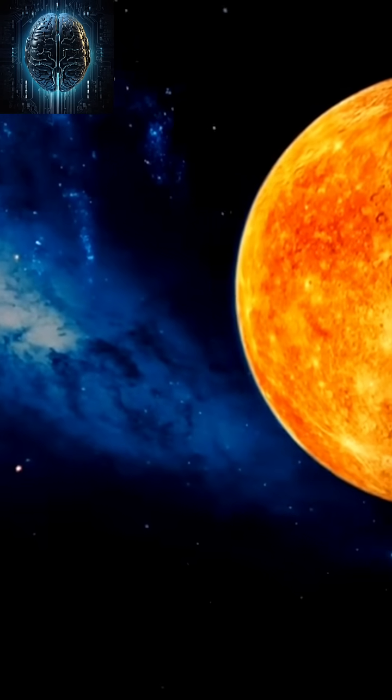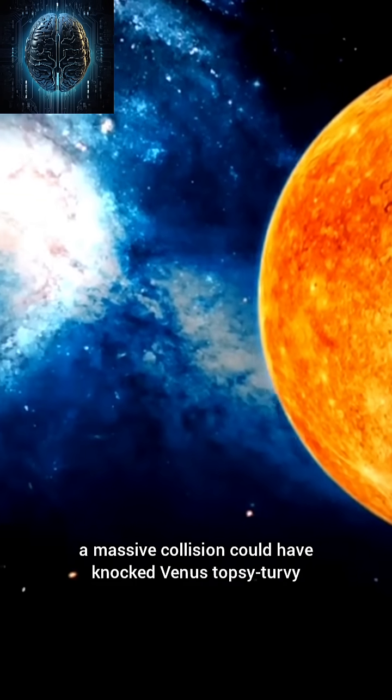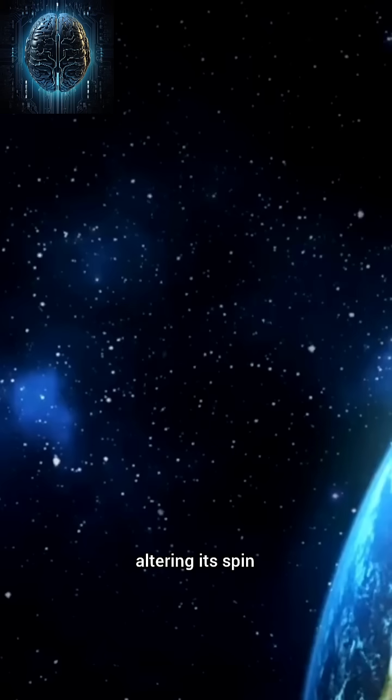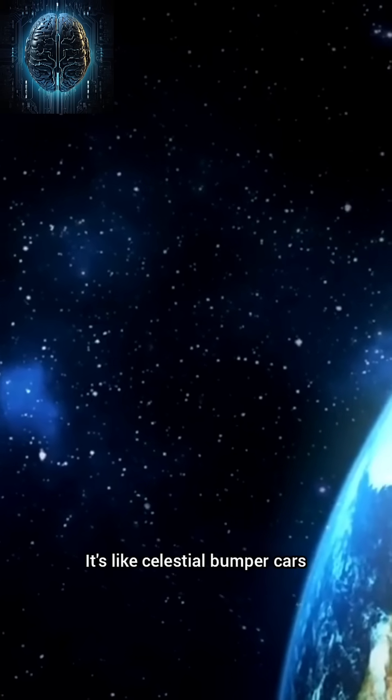One possibility? Billions of years ago, a massive collision could have knocked Venus topsy-turvy, altering its spin. It's like celestial bumper cars.